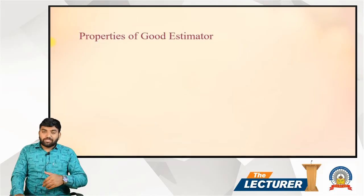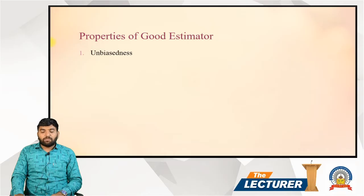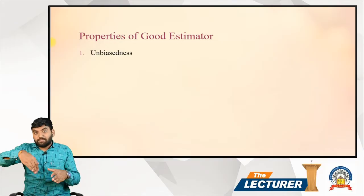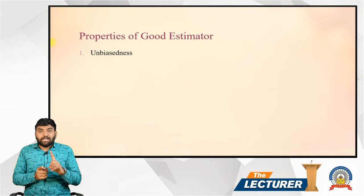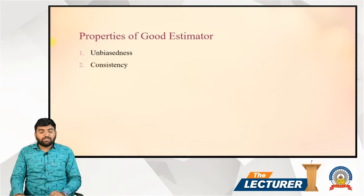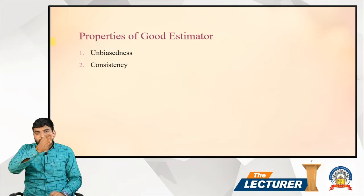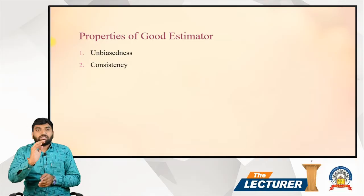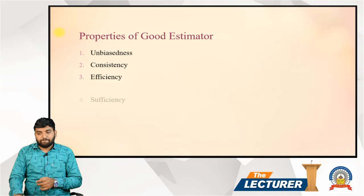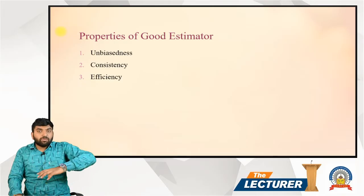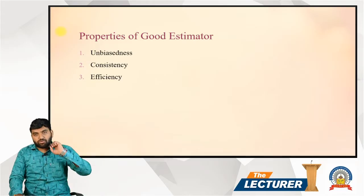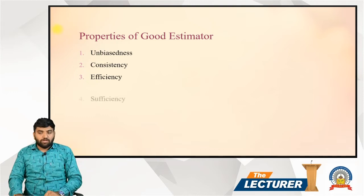Properties of a good estimator: First, unbiasedness — the estimator should not be biased. Second, consistency — the estimator should maintain consistency. Third, efficiency — the estimator should be efficient. Fourth, sufficiency — the estimator should use all available information in the data.